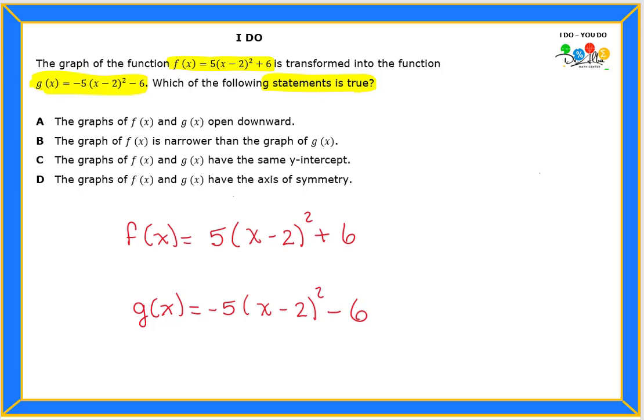Well, I can tell since this one is positive and this one is negative, they're not going to be facing the same way. The first one is going to be upward and g(x) is going to be downward. That's the first thing we notice.